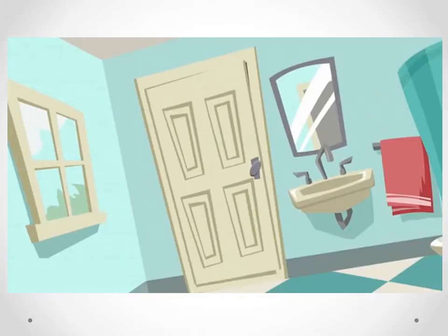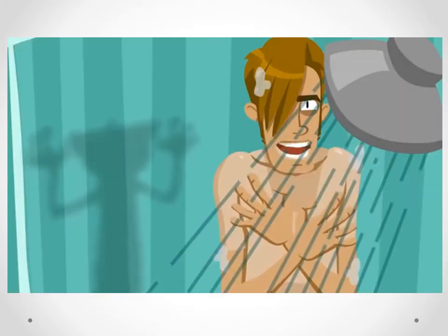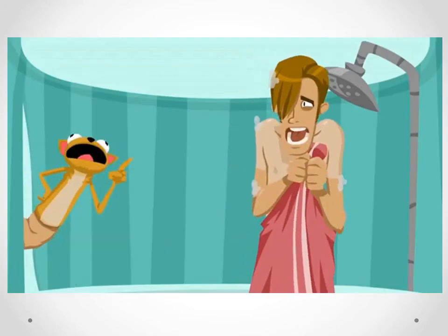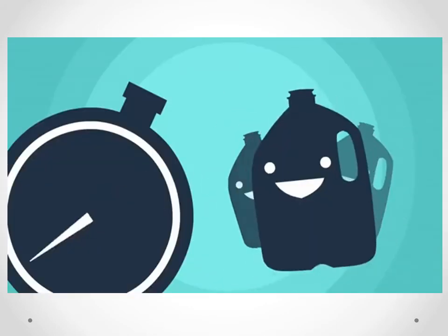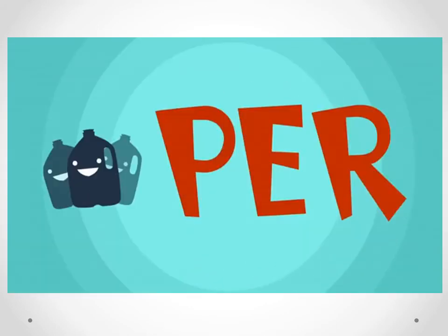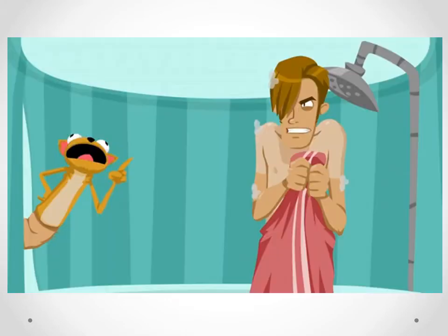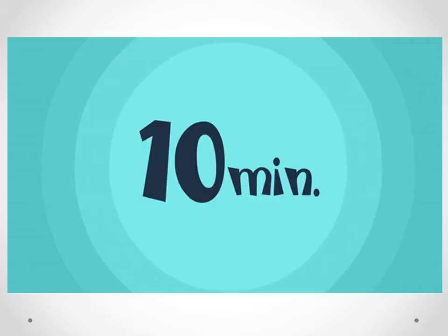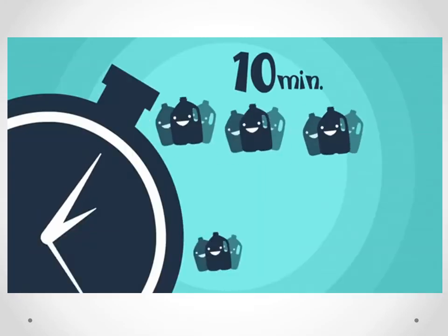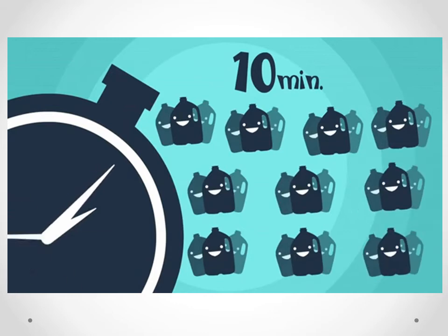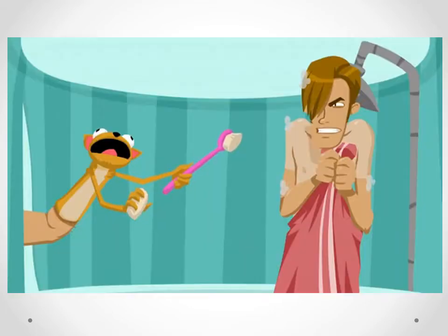Turn off the shower — you're wasting water. She's right. Water flows through that shower head at three gallons per minute. You've been showering for 10 minutes; that's 30 gallons of water down the drain. Get out of the shower.